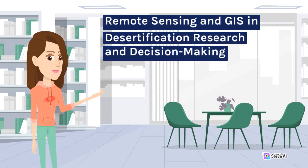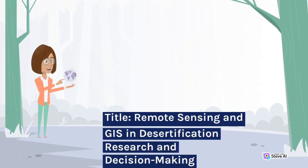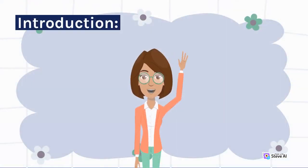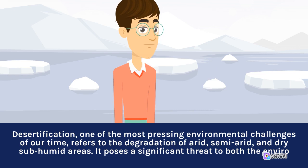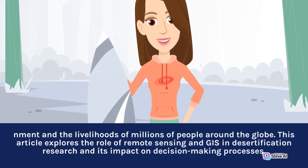Remote Sensing and GIS in Desertification Research and Decision-Making. Desertification, one of the most pressing environmental challenges of our time, refers to the degradation of arid, semi-arid, and dry sub-humid areas. It poses a significant threat to the environment and the livelihoods of millions of people around the globe. This article explores the role of remote sensing and GIS in desertification research and its impact on decision-making processes.